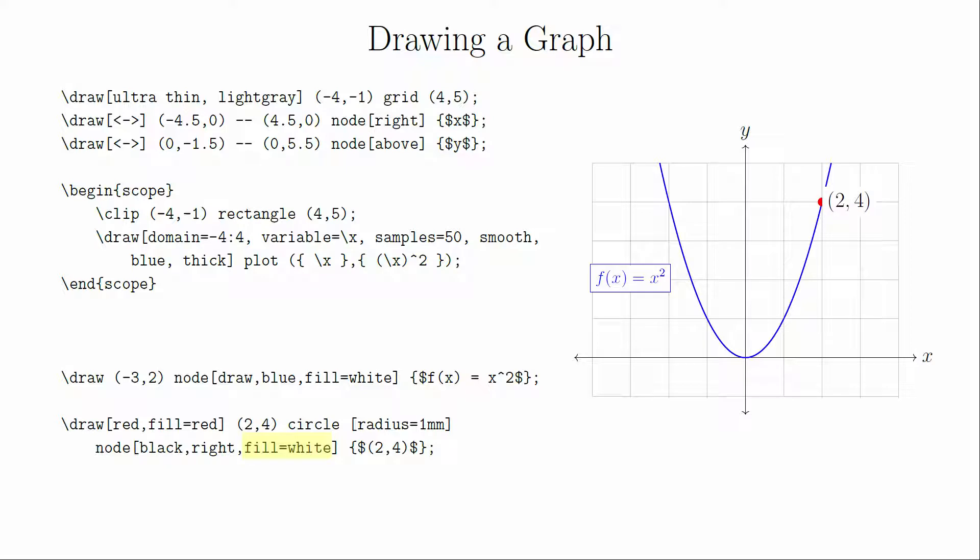If we tried to fill the node white, it would end up drawing over both the graph and the dot as well. We could fix this by drawing the coordinates much earlier in the drawing, translating the coordinates further to the right, or we can just live with the line cutting through the text.